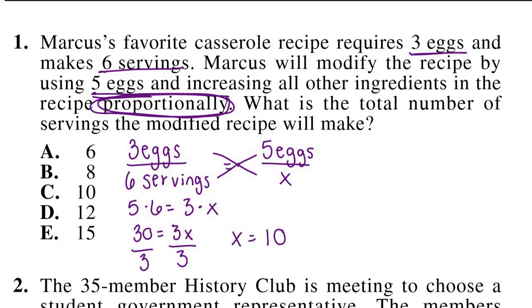And that 10 tells us that if we use 5 eggs and increase all of our other ingredients, we will make 10 servings, which is what this question is asking. So our answer is 10. Let's see if it matches any of our answers over here. And it does. C is 10. So our answer to number 1 is C.